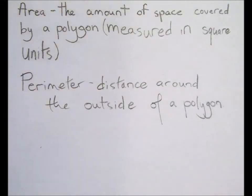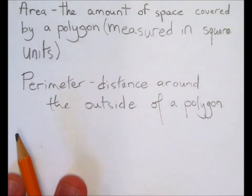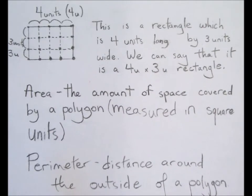Next, I want to talk about area and perimeter. Area and perimeter are pretty important uses of measurement, and they apply to lots of different things. Perimeter refers to the distance around the outside of a polygon, and area refers to the amount of space covered by a polygon, and that's measured in square units. So, let's take a look at a rectangle here.